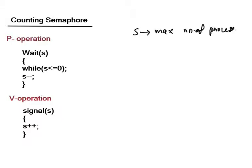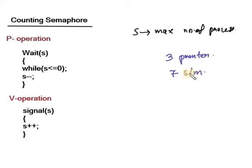I will explain with an example. Suppose we have a resource like three printers and seven systems. So S is equal to 3, which is the maximum number of resources available.